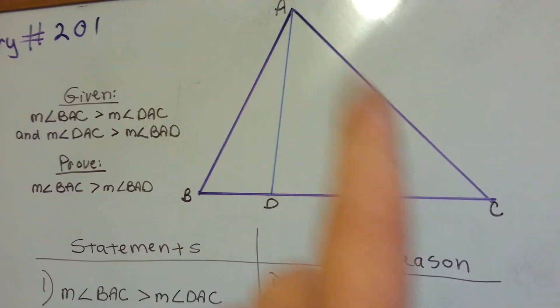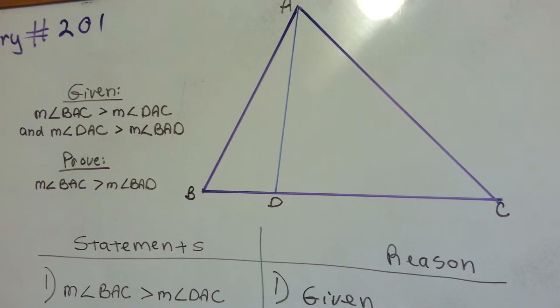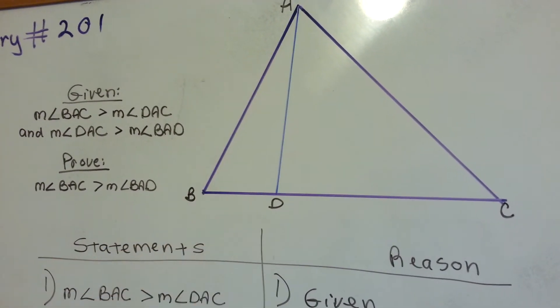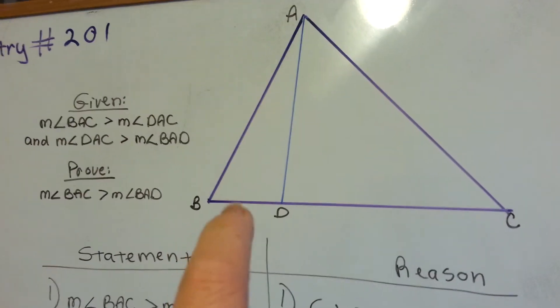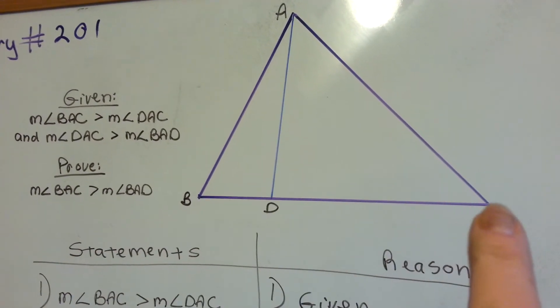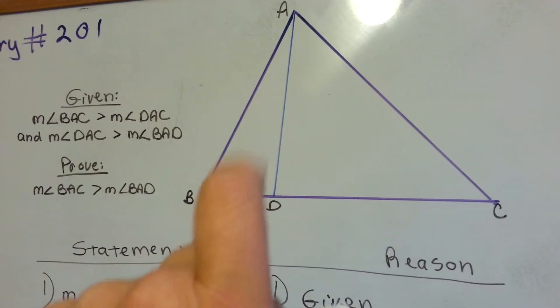And angle DAC, this one on this side, is greater than this skinny one here. And you need to prove that this big one is greater than this skinny one.